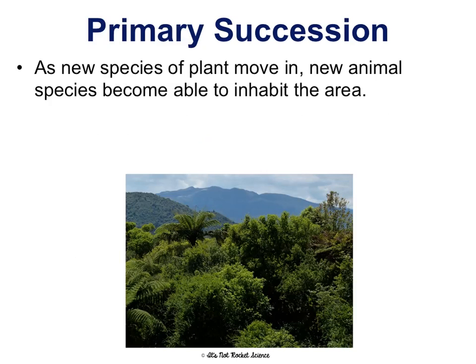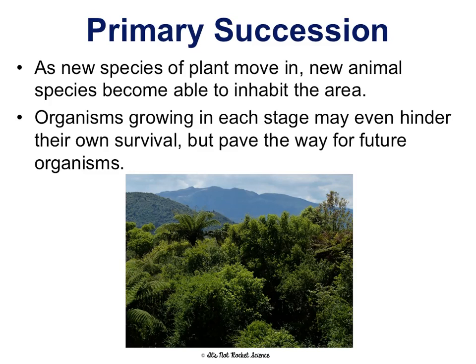As new species of plants move in, new animal species can also inhabit. Note that plant species obviously can't walk, but they can travel — moss spores can travel through the air, blow in, or migrate in on other animals passing through the area. Animals will start coming once the plants are there. Organisms growing in each stage may hinder their own survival — mosses may not flourish later on, but they're paving the way for future organisms.